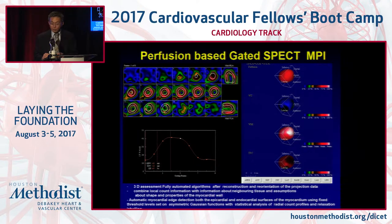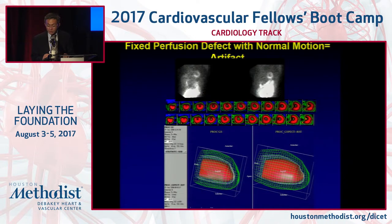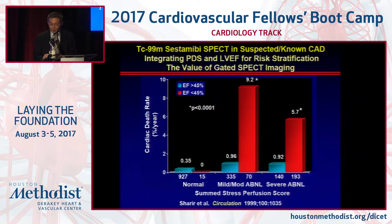Another advantage — a bonus of doing myocardial perfusion imaging — is that you're not only getting perfusion information, you're also getting functional information: LV size and LVEF, which are very important in addition to diagnosis. For example, in a woman with a fixed anterior defect, if the functional information shows normal wall motion, you can tell that this is artifact rather than a true fixed defect or scar. EF in addition to perfusion adds significant prognostic information for management decisions. From the same study you can obtain perfusion, EF, and size — all significant predictors of prognosis.